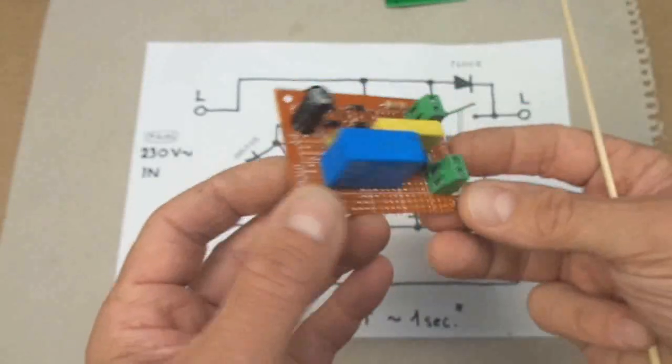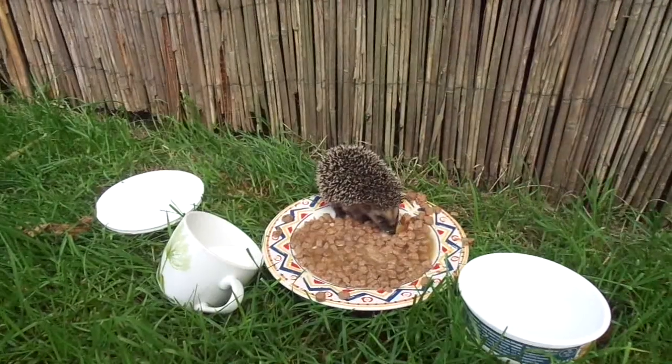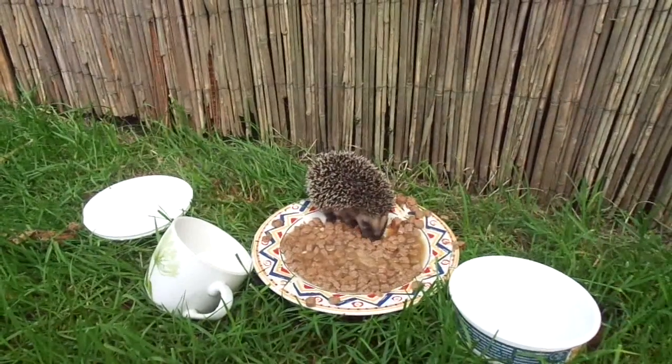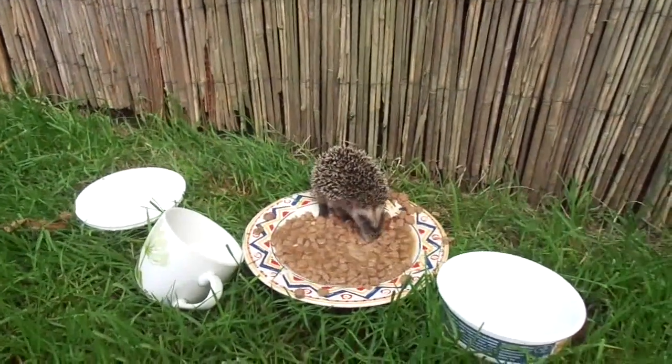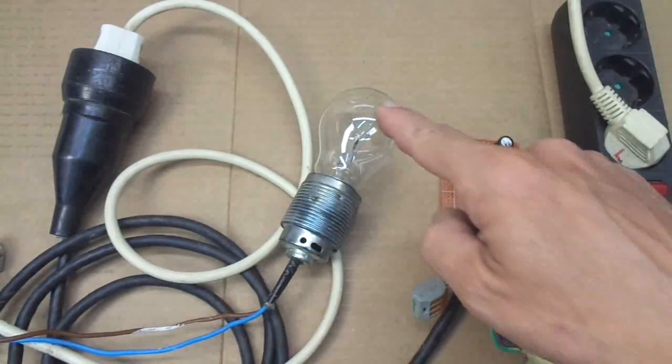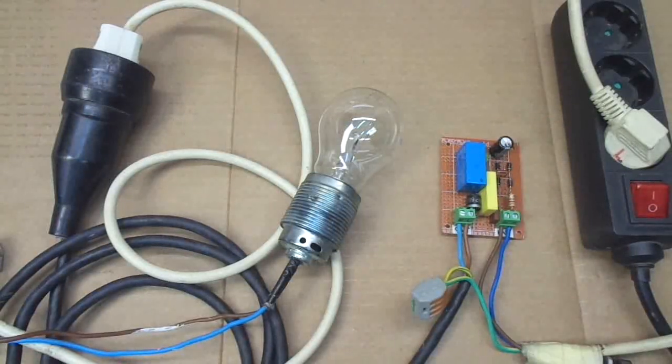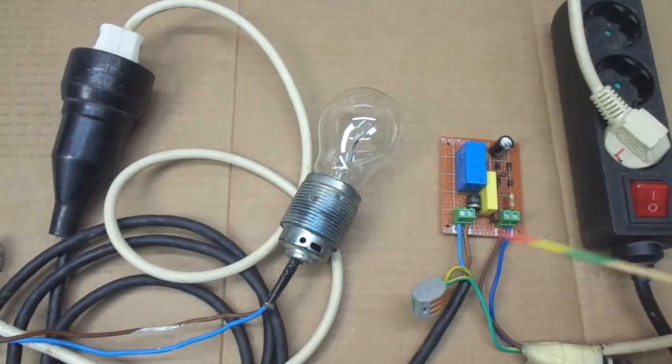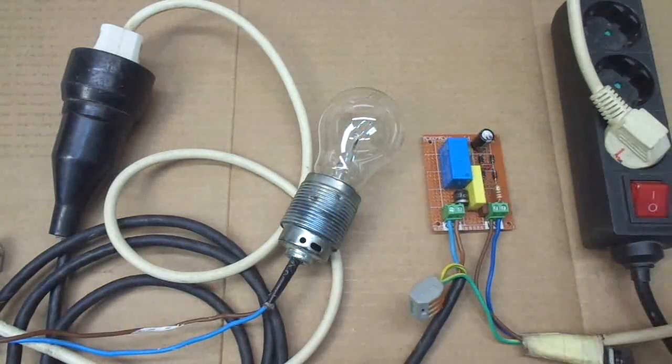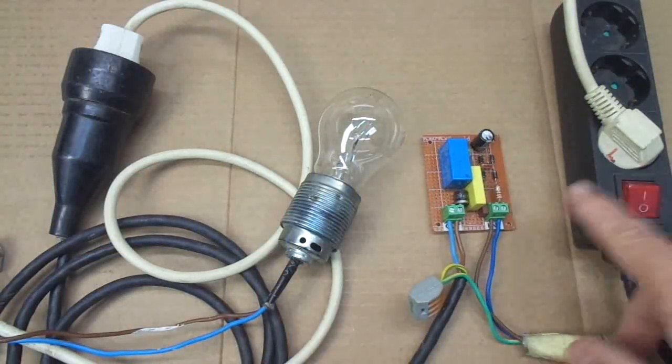So here is my setup. I have hooked up an incandescent light bulb to the output of my circuit, and here I have my input mains voltage with my power strip here.